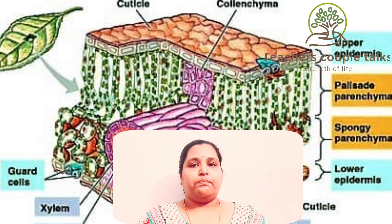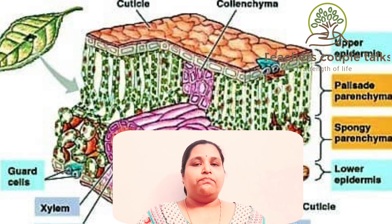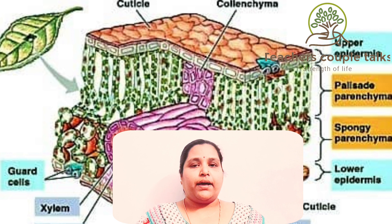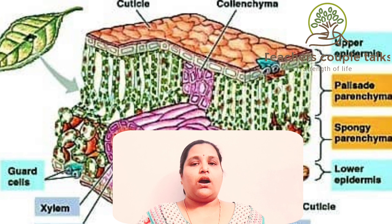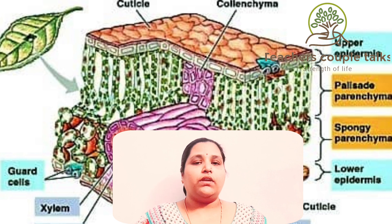The palisade parenchyma and spongy parenchyma lying between the upper and lower surfaces is called the mesophyll of the leaf. Thank you.